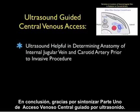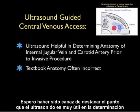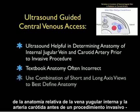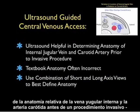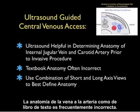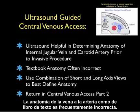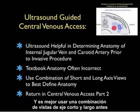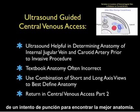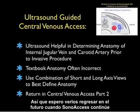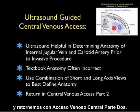In conclusion, thanks for tuning in for part one of ultrasound guided central venous access. I hope I've made the point that ultrasound is very helpful in determining the relative anatomy of the internal jugular vein and carotid artery prior to an invasive procedure, as the textbook anatomy of vein to artery is often incorrect. It's best to use a combination of short and long axis views prior to a puncture attempt to best define the anatomy. I hope to see you back as SoundBytes Cases continues in central venous access part two.